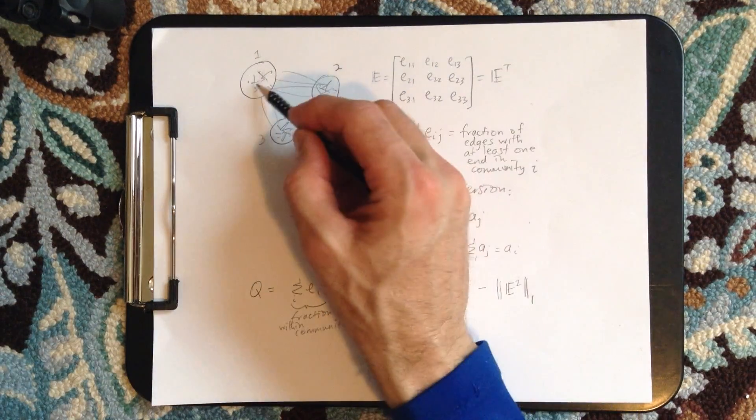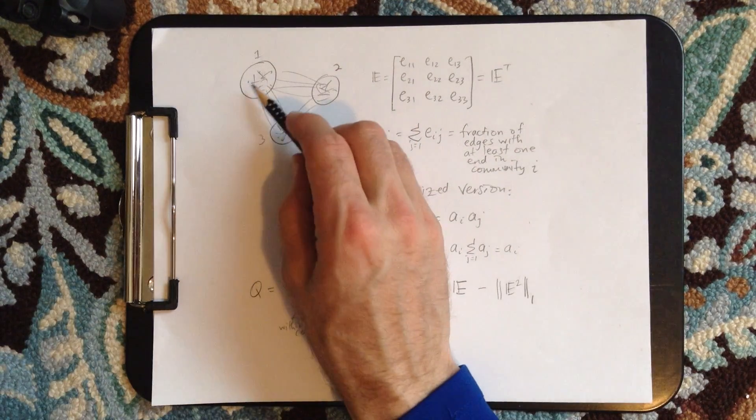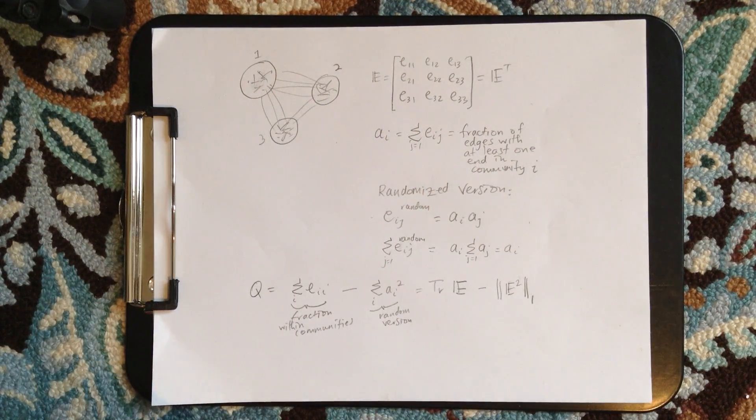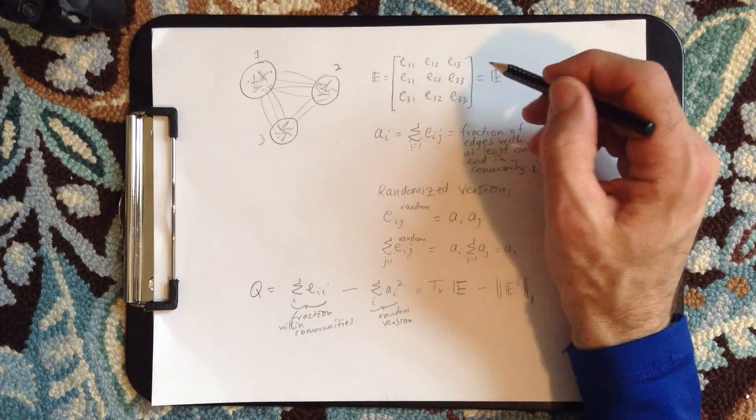So E1 is the fraction of edges between nodes in community one. If we sum across, it doesn't matter, but if we're summing across,